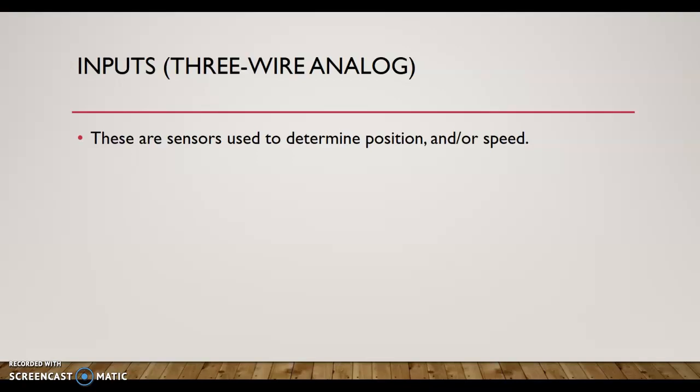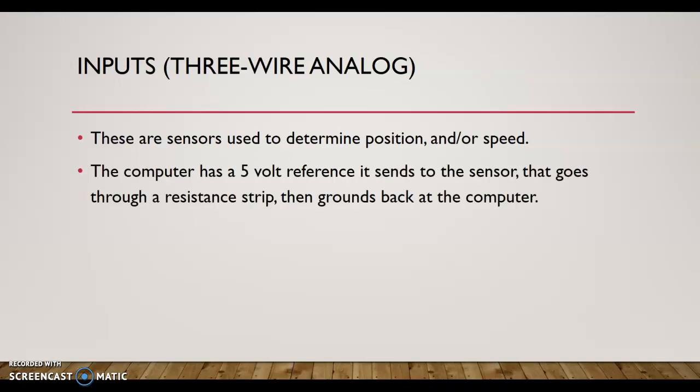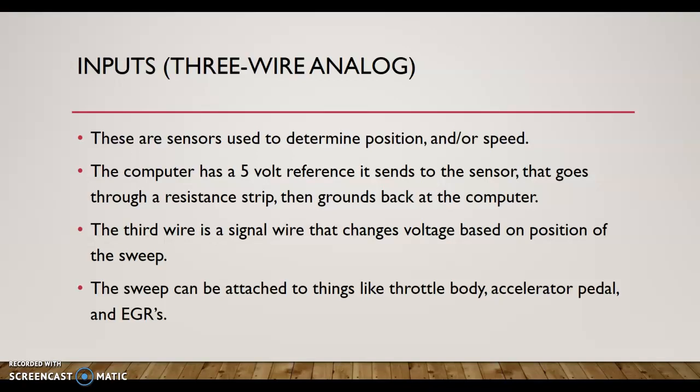These are sensors used to determine position and/or speed. The computer has a 5-volt reference it sends to the sensor that goes through a resistance strip then grounds back at the computer. The third wire is a signal wire that changes voltage based on the position of the sweep. A sweep is attached to things like throttle body, accelerator pedal, EGRs—anything that needs to have something that moves where it needs to know the position and/or speed.